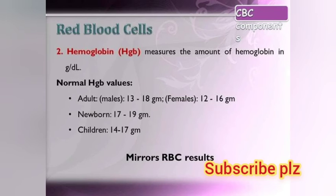Hemoglobin (HGB) measures the amount of hemoglobin in grams per deciliter. Normal hemoglobin values are: adult male 13 to 18 g/dL, female 12 to 16 g/dL, newborn 17 to 19 g/dL, and children 14 to 17 g/dL.